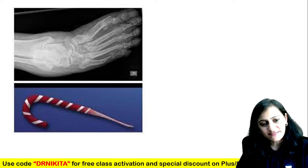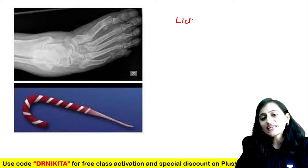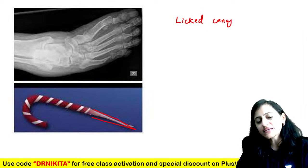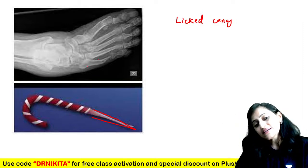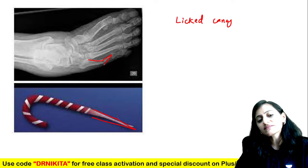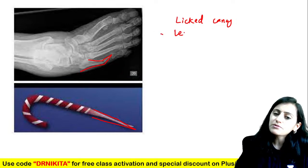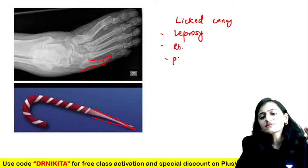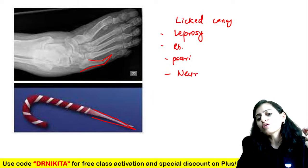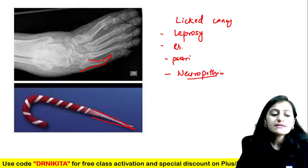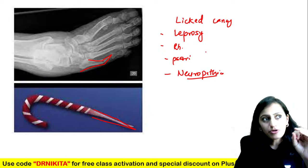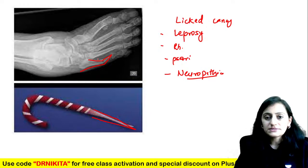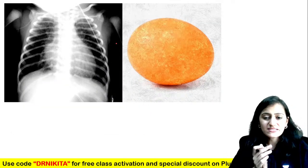This is the licked candy appearance — the pointed end that we get with the licked candy. Look at this metatarsal bone showing this pointed appearance. Licked candy appearance is commonly seen with leprosy, and also with rheumatoid arthritis, psoriatic arthritis, and the Charcot joint — the neuropathic joint.